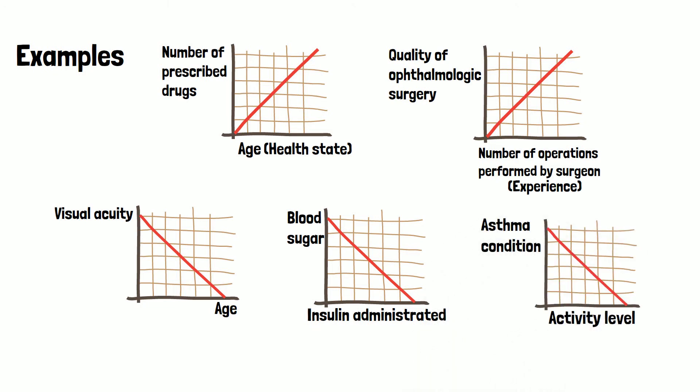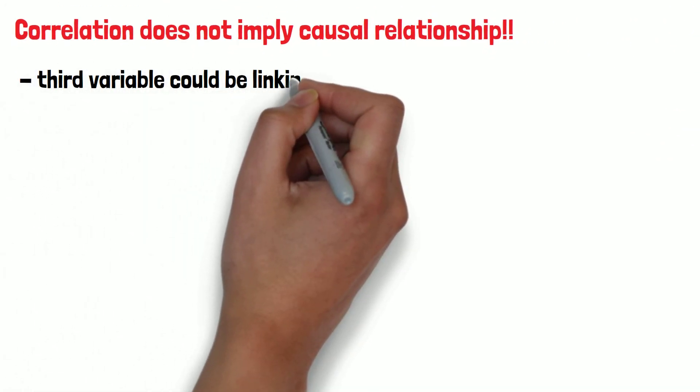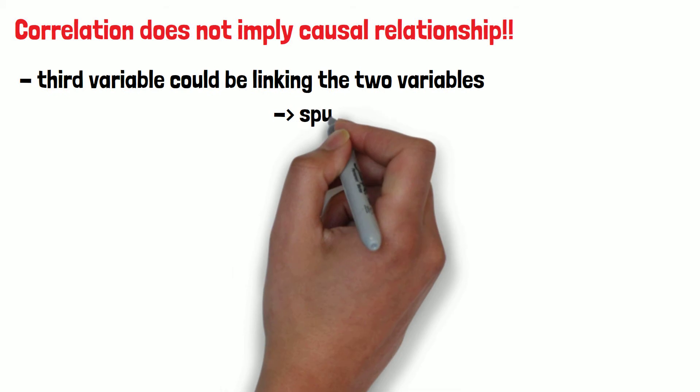It is very important to remember that a correlation between two variables does not imply a causal relationship between these. A third variable could be involved linking these two variables. Correlations of this kind are called spurious correlations.